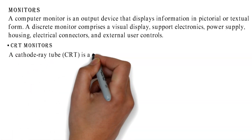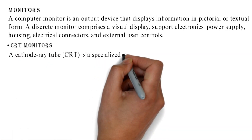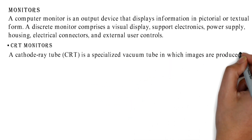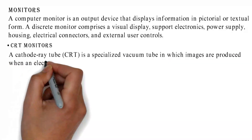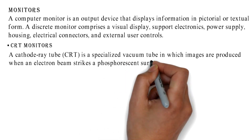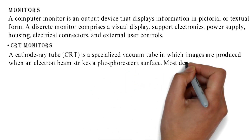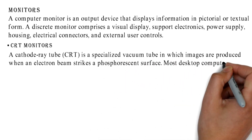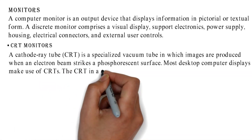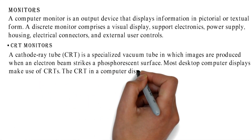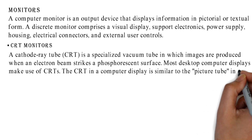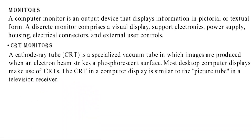A cathode ray tube, CRT, is a specialized vacuum tube in which images are produced when an electron beam strikes a phosphorescent surface. Most desktop computer displays make use of CRTs. The CRT in a computer display is similar to the picture tube in a television receiver.